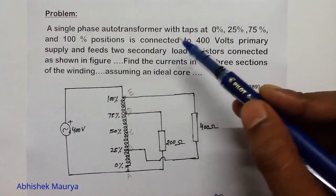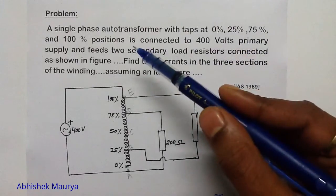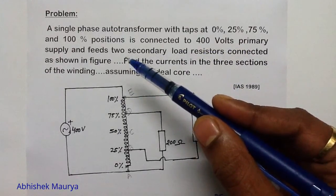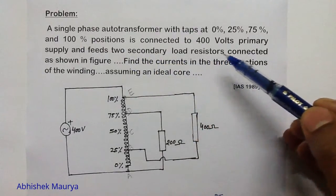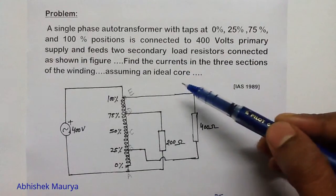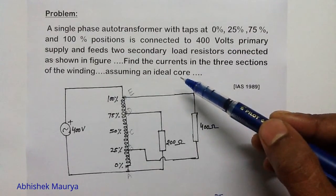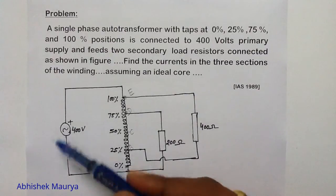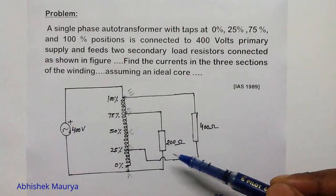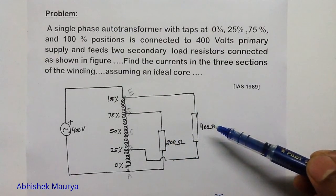In this question, a single-phase autotransformer with taps at 0%, 25%, 75%, and 100% positions is connected to a 400V primary supply. This autotransformer feeds two secondary load resistors: a 200Ω load resistor and a 400Ω load resistor, connected as shown in the figure.